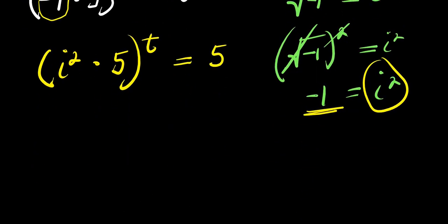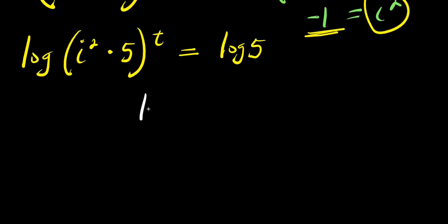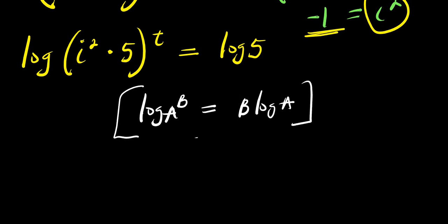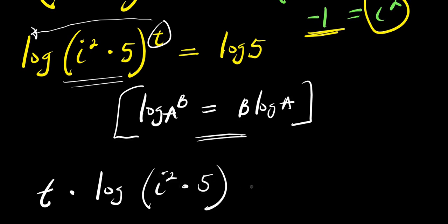Now what I'm going to do is to make use of log. So I have log of i² times 5 raised to the power of t equals log 5. From here, I'm going to apply the logarithm property: log of a^b equals b times log a. So I can apply this property right here, meaning t will come in front of the log. So I'm going to have t times log(i² times 5) and this equals log 5.